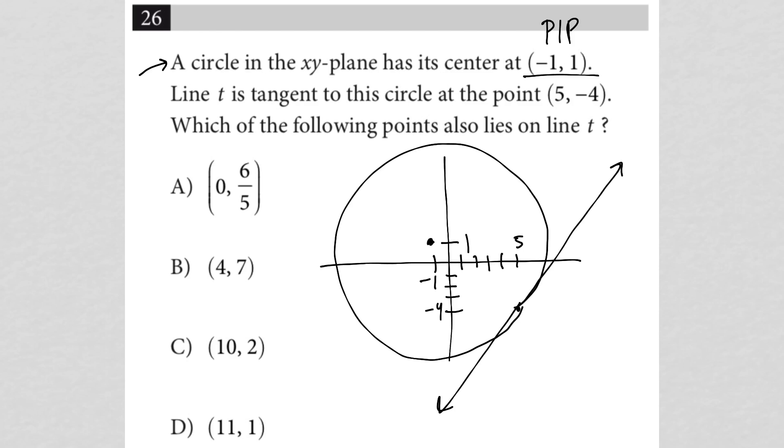So it looks like choice A is asking if the point 0, 6 fifths is on line T. This is line T. 0, 6 fifths, well that would be like around there. That's definitely not on line T. So that's out.